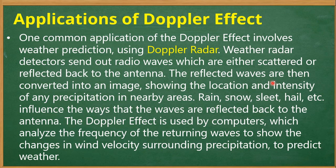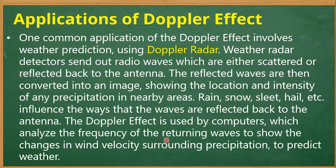The reflected waves are then converted into an image showing the location and intensity of any precipitation in nearby areas. The Doppler effect is used by computers which analyze the frequency of the returning waves to show the changes in wind velocity surrounding precipitation, and to predict weather patterns.